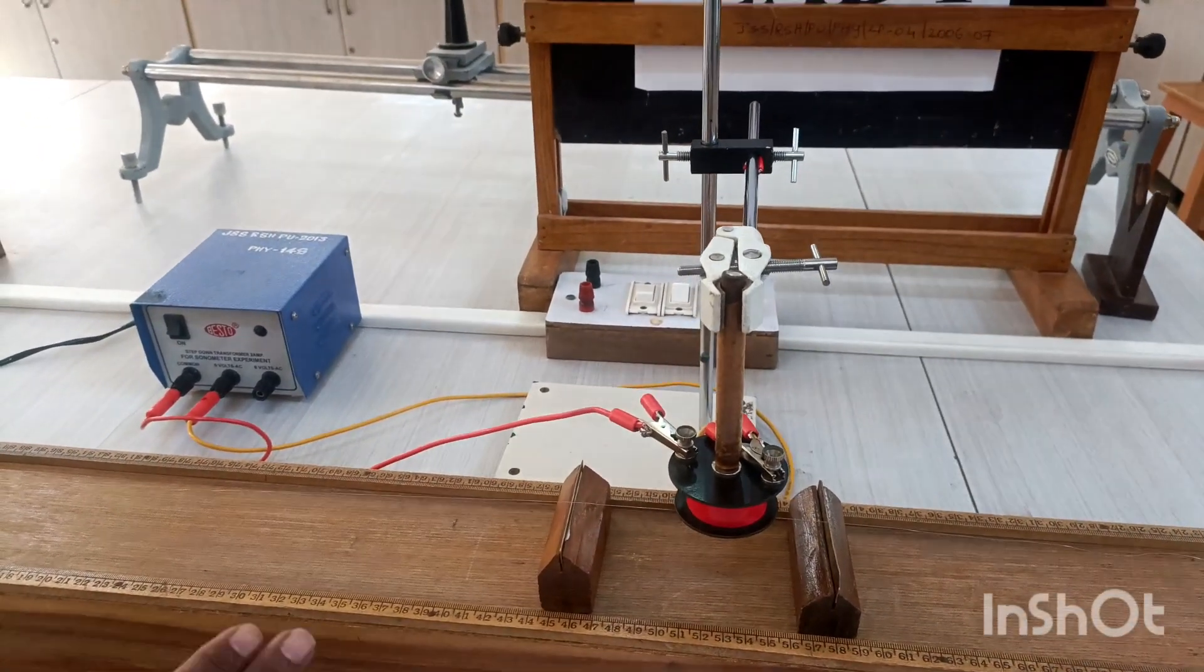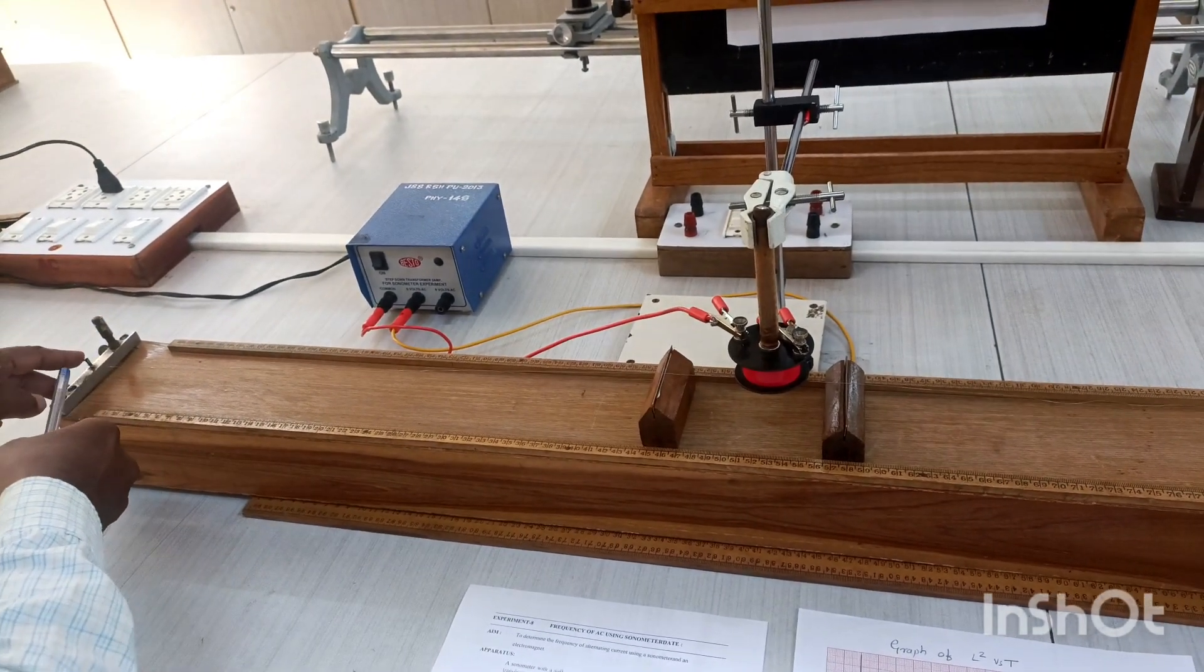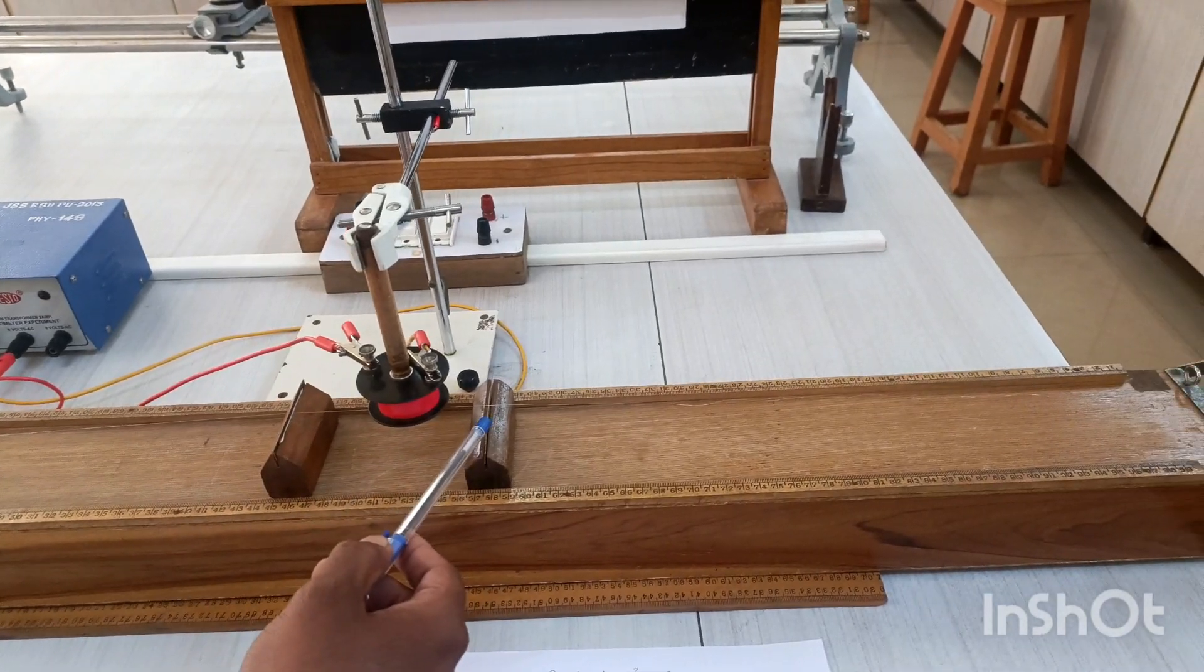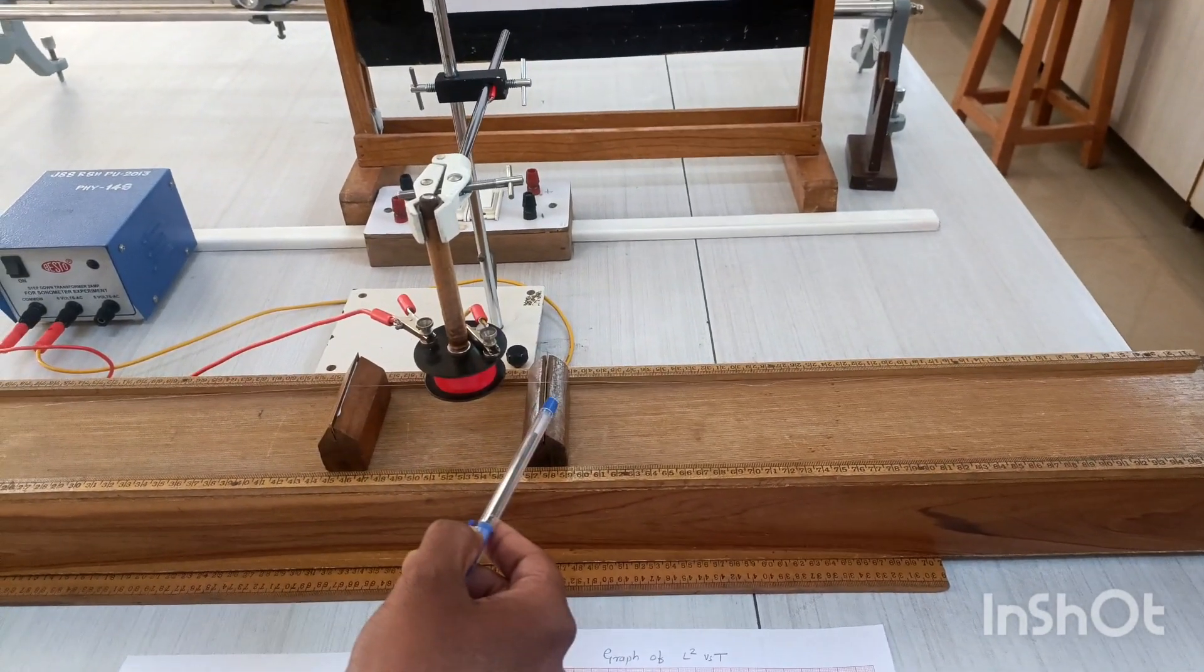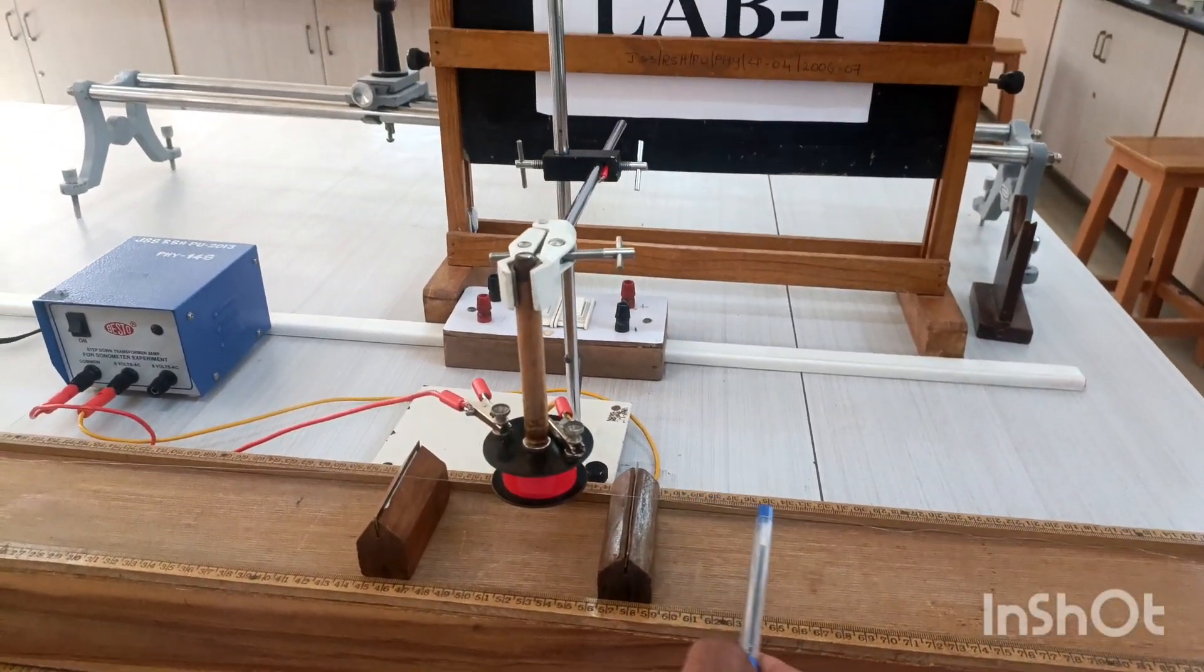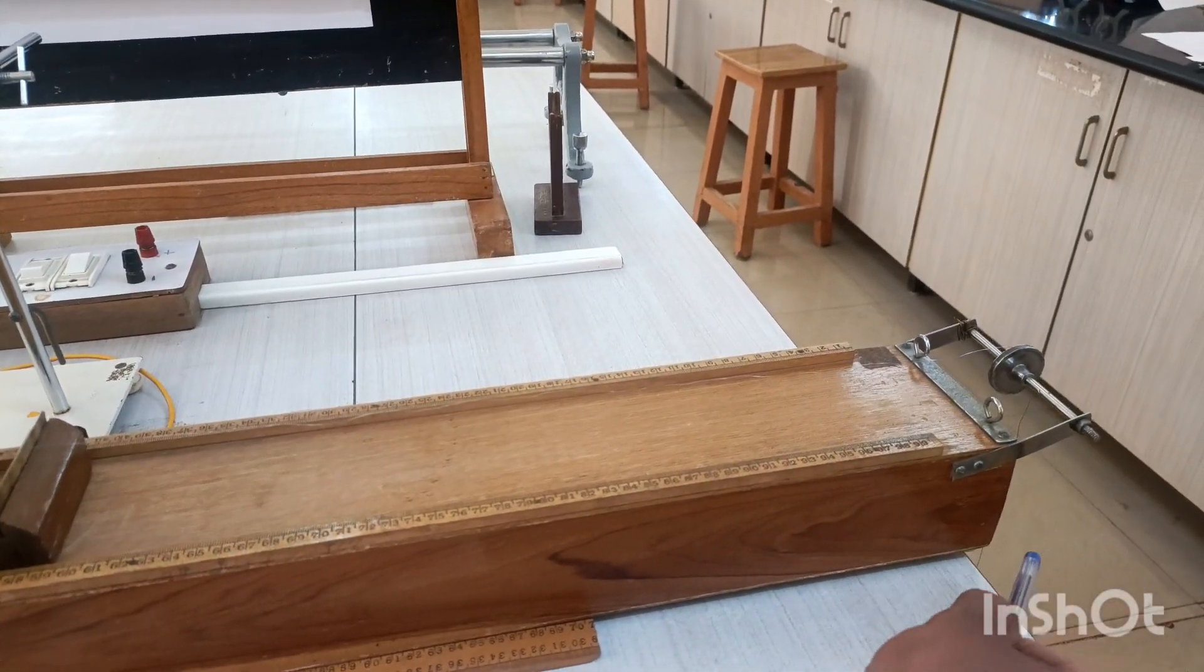There is a sonometer board with a wire attached at one end. The wire passes over two movable sharp bridges with knife edges, and an electromagnet is placed between them. The wire passes over a frictionless pulley and is attached to a weight hanger.